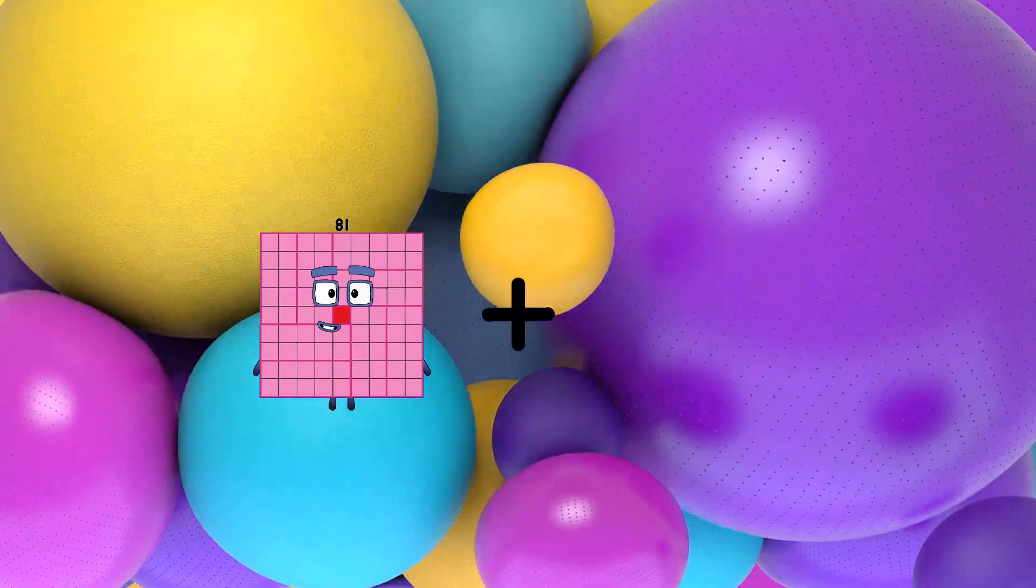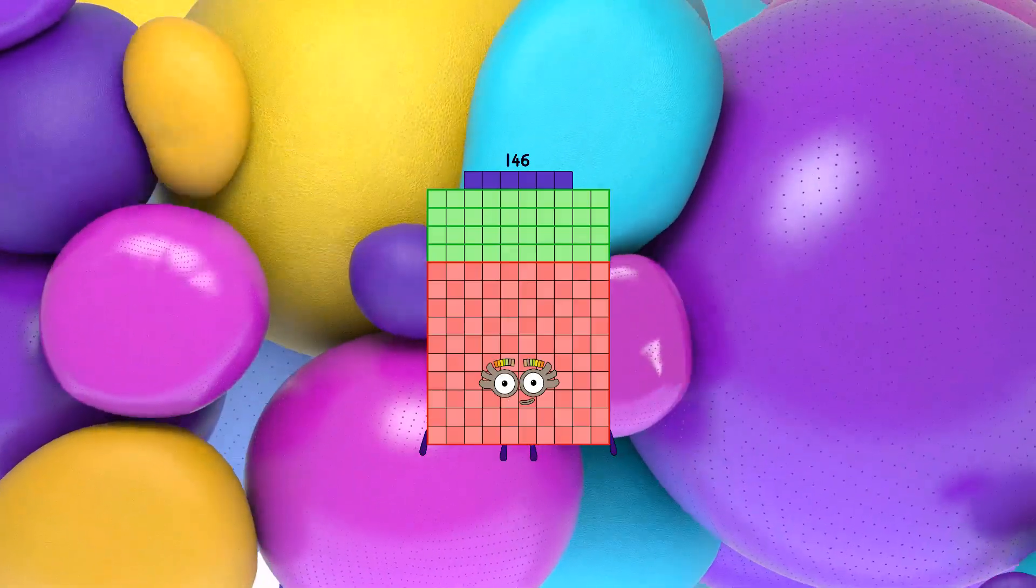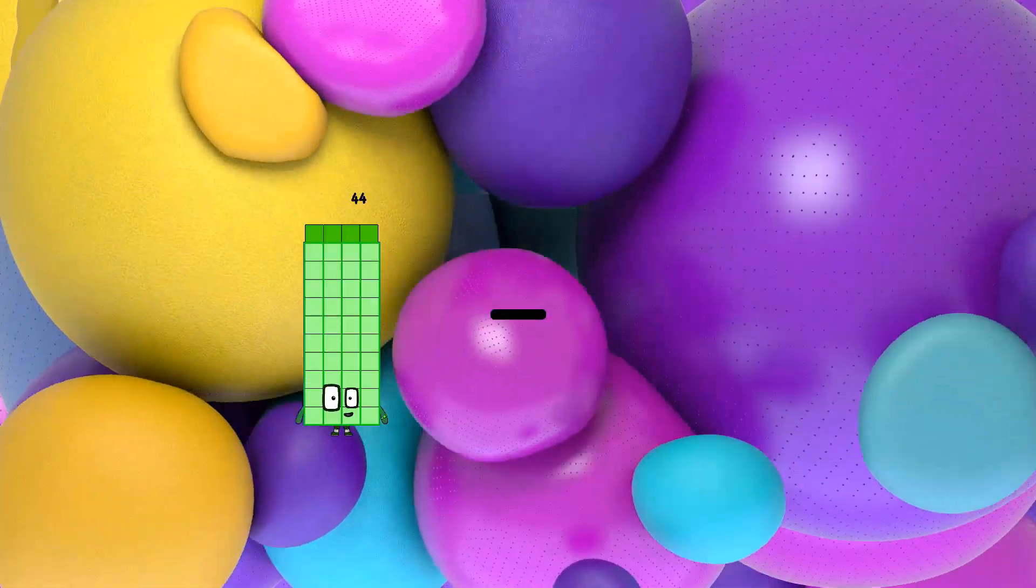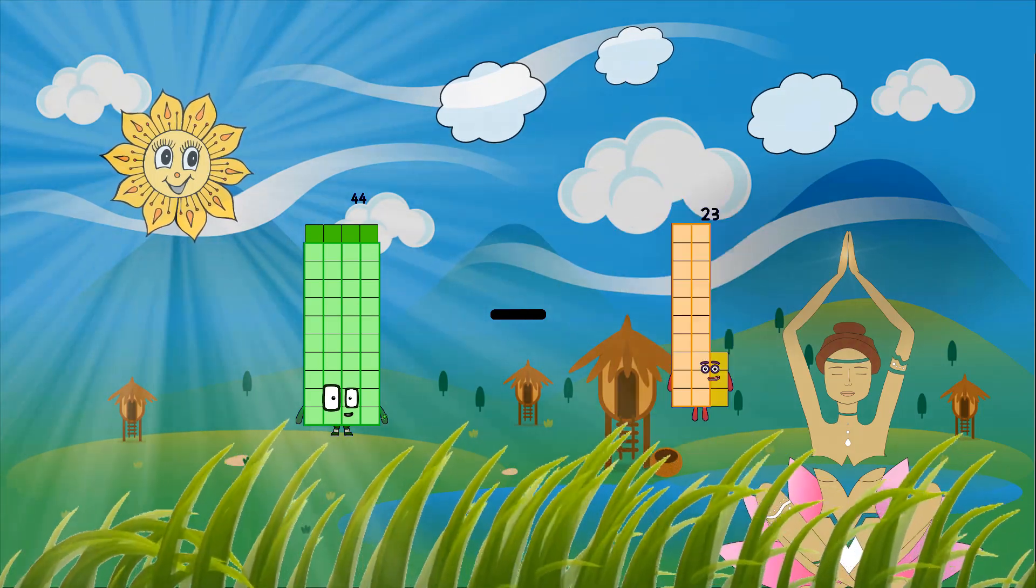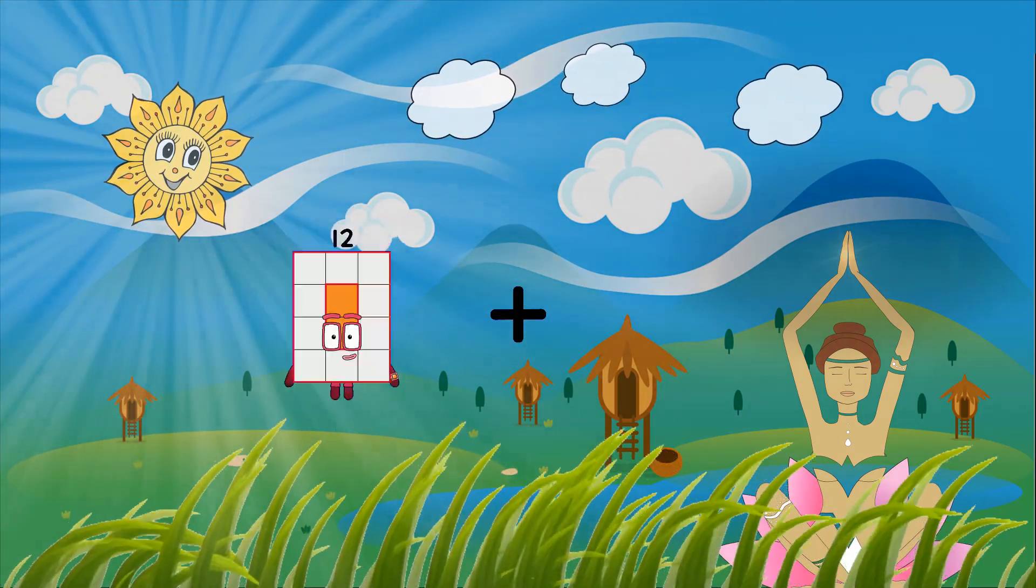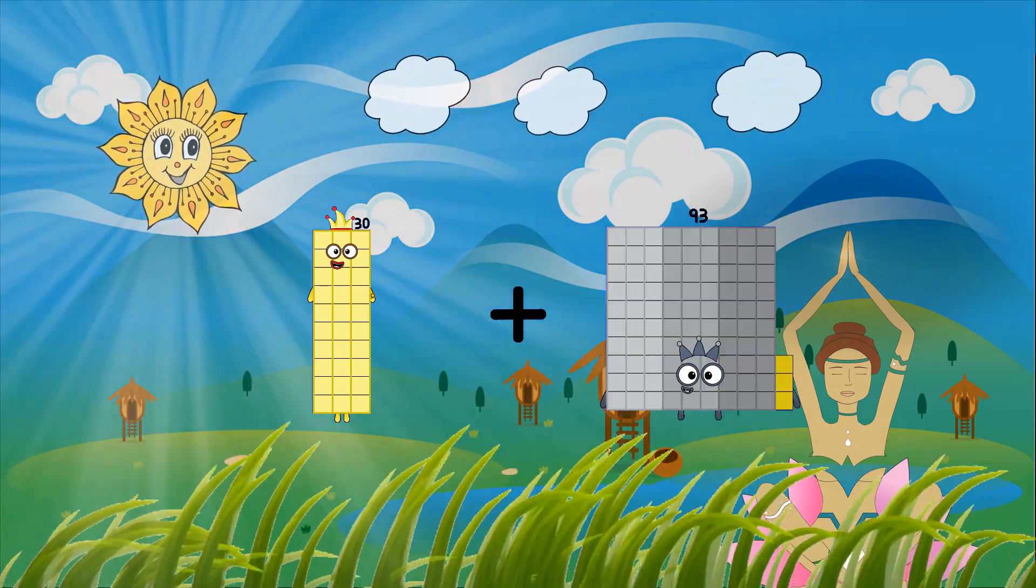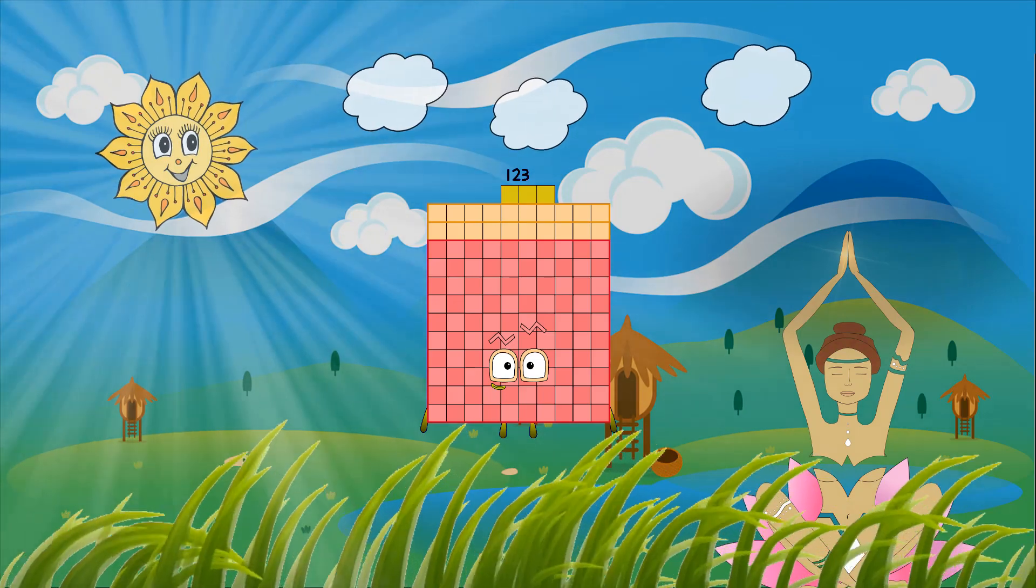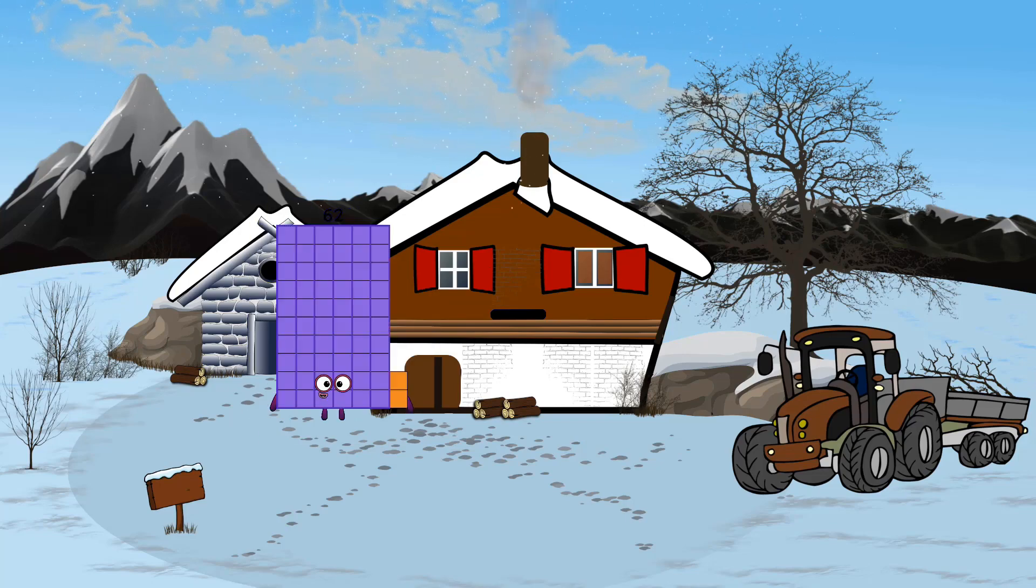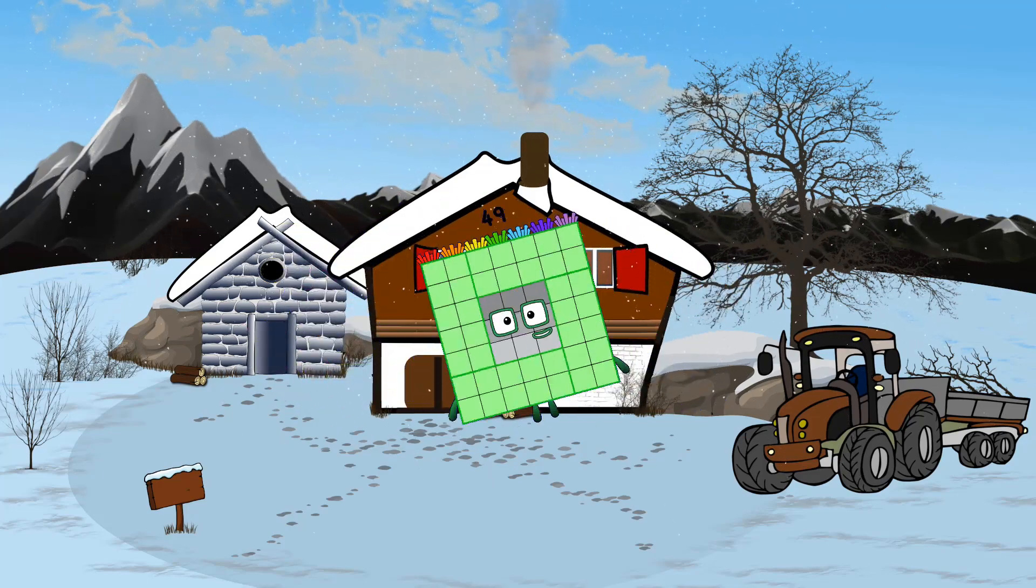81 plus 65 equals 146, 44 minus 44 equals 0, 30 plus 93 equals 123, 62 minus 13 equals 49.